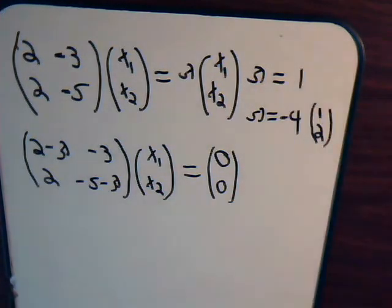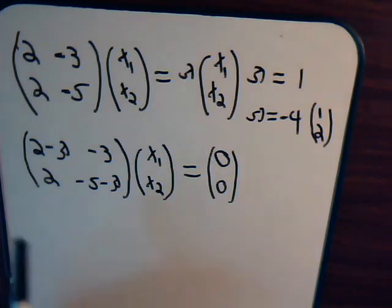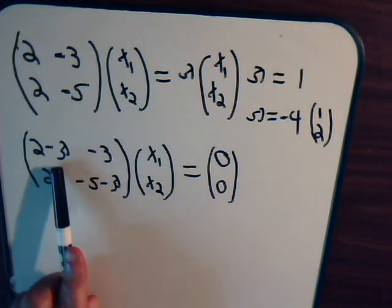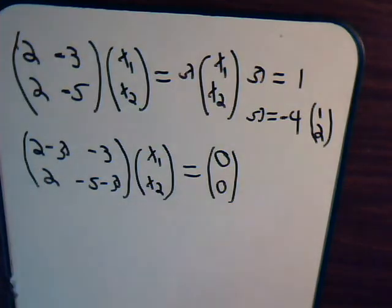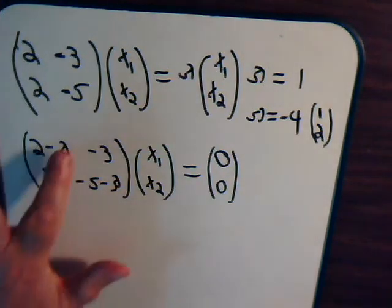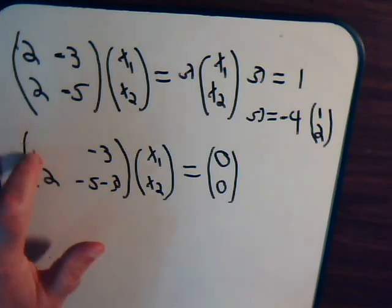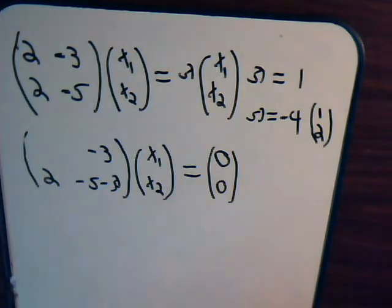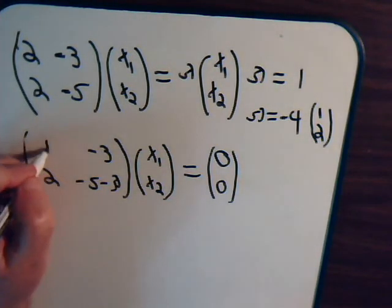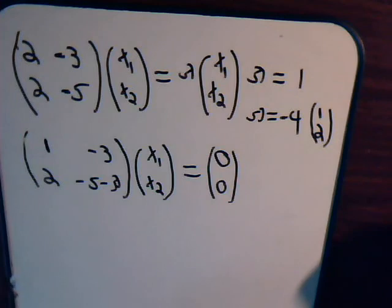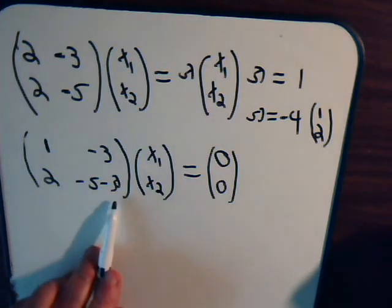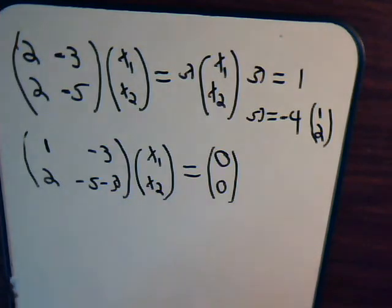Now we have to work with eigenvalue 1. So we compute: 2 minus 1 gives us 1, and minus 5 minus 1 is minus 5 plus negative 1, which gives us negative 6.